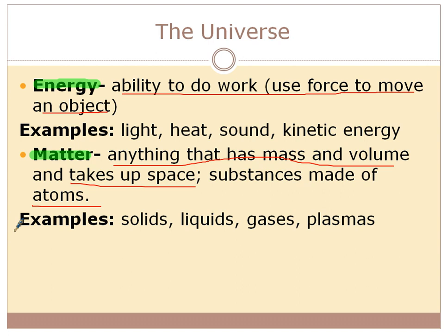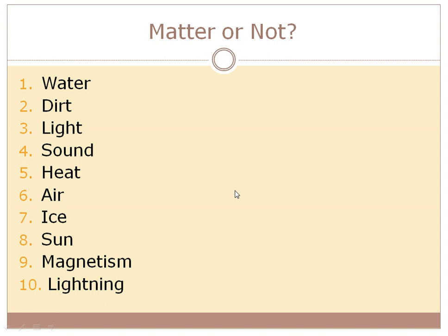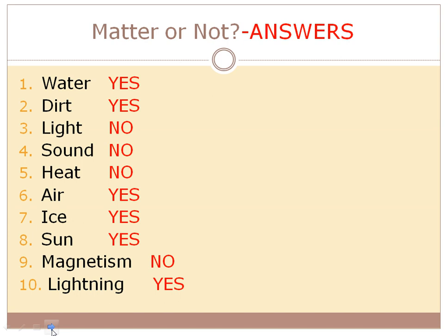Look at these ten things and figure out if each is made of matter or not — either matter or energy. If it's matter, put yes; if it's not matter, in other words it's energy, put no. Hit pause on the video and try to label them. Hopefully you hit pause — here are the answers, see how you did.